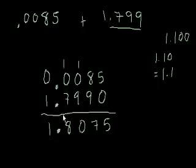And we're able to do that because we already lined up the decimal points. So the answer to this problem is 1.8075. It seems complicated, but all you have to do is line up the decimal points, add 0's where appropriate, and add. And if you know how to add, you already know how to do this.